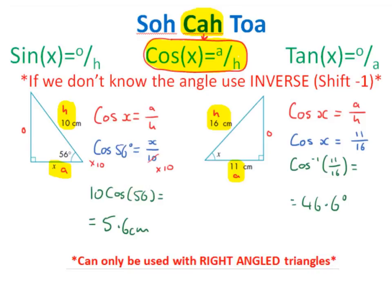Since we knew the angle in that example, we did not use the inverse function. In the next example, we label 16 as h, 11 as a, and the side opposite the angle is unknown. Again using a and h, we go with CAH: cos of x equals a over h. We substitute a for 11 and h for 16. Since we don't know the angle, we press shift and cos — cos to the power of minus 1 comes up with an open bracket. We enter 11 over 16, close the bracket, and get 46.6 degrees rounded to one decimal place.